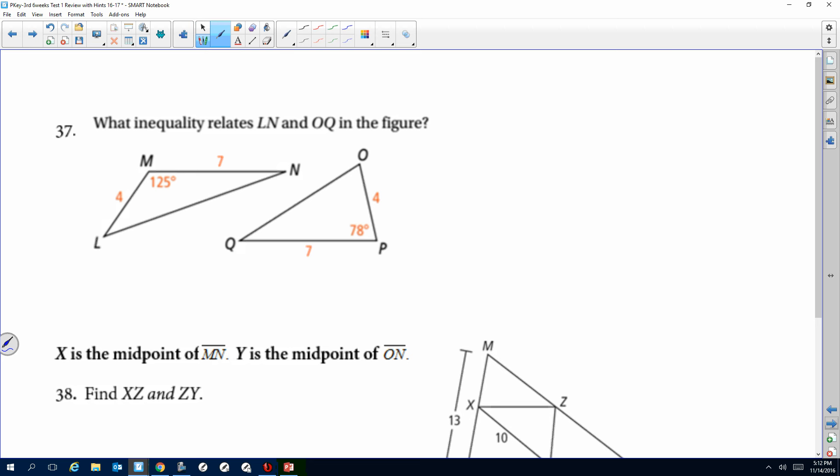Comparing two triangles. So they want us to say what's related to LN and OQ. Well, here's my OQ, that's my blue segment. My LN is going to be my green segment right here. I look opposite, that's 125. I look opposite my blue segment, that's 78. But 125 is greater than 78, so that means that LN has to be, that segment has to be greater than OQ.